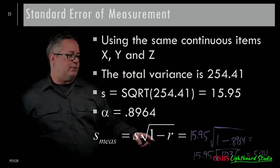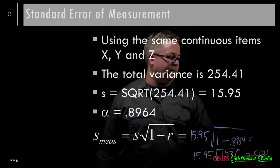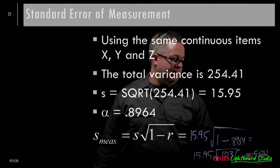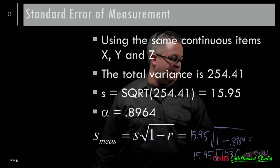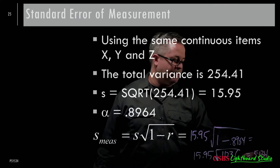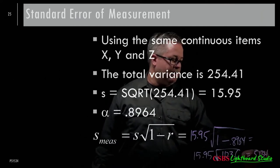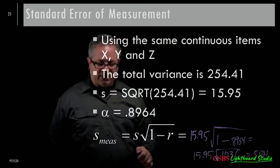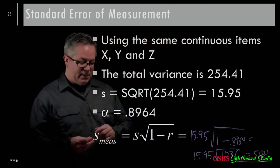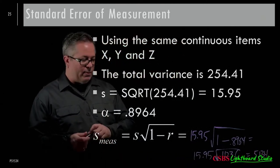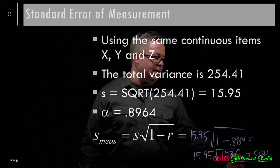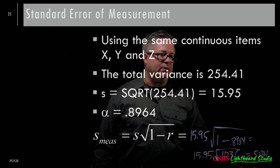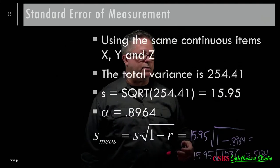So 5.134 is a measure of how much error there is in terms of the scale — how much prediction error there would be. If you're measuring something on this scale, whatever you're measuring will be roughly plus or minus about five units in terms of error variability.